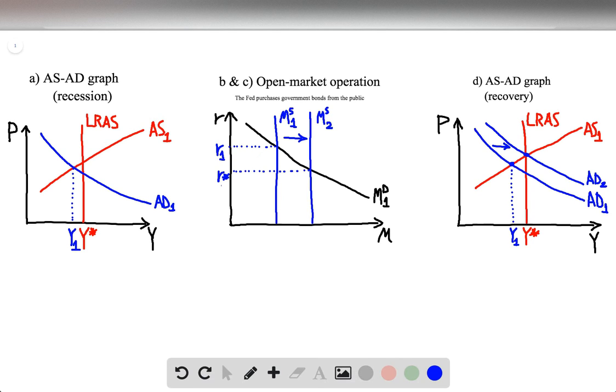Part 1 asks us to draw a graph of the aggregate demand and aggregate supply to illustrate the current situation. Be sure to include the aggregate demand curve, the short-run aggregate supply curve, and the long-run aggregate supply curve.